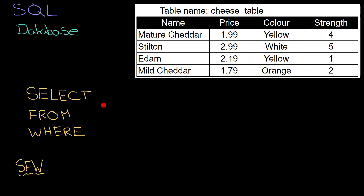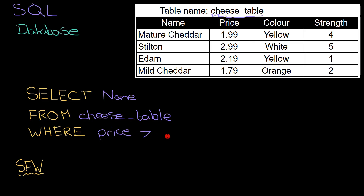Let's say I wanted all cheeses which are over the price of two pounds, and I only want the names of those cheeses. I could do SELECT name — because I just want the name — FROM cheese_table, cheese_table being the name of the table you can see here, WHERE price is greater than two.